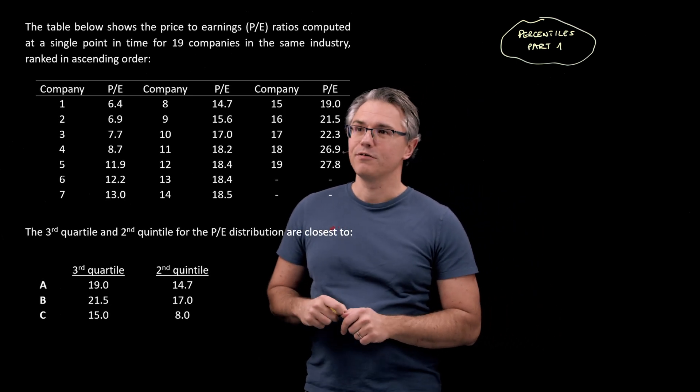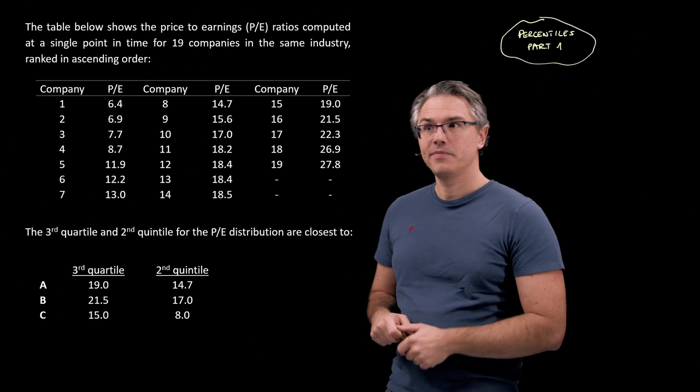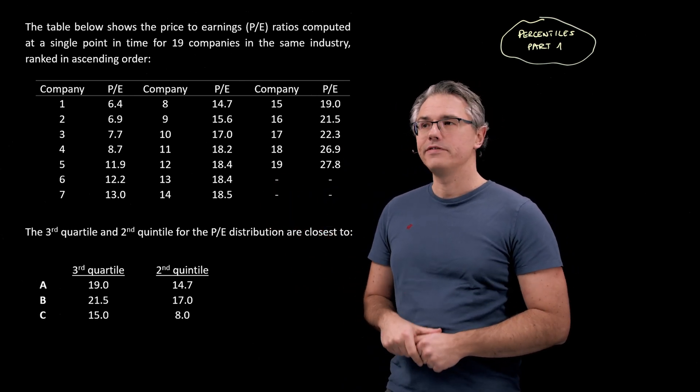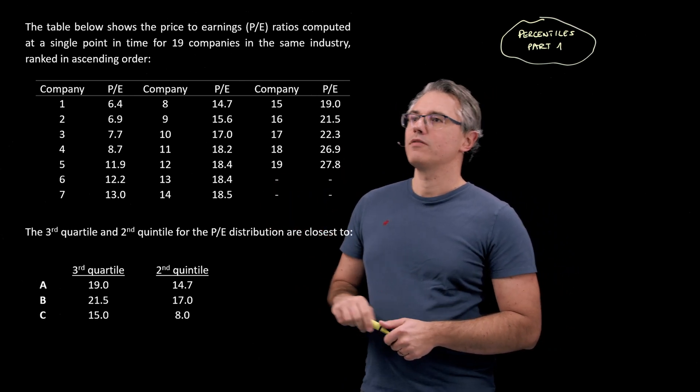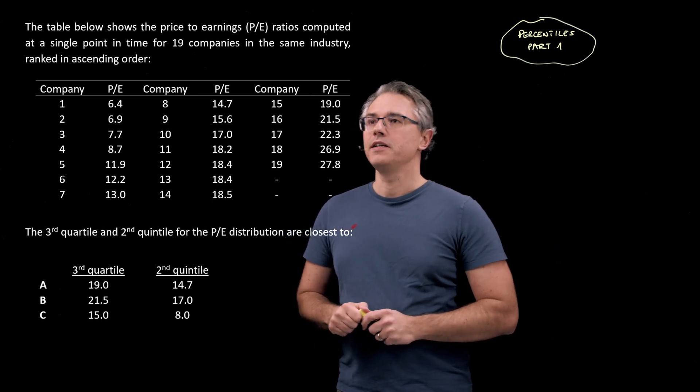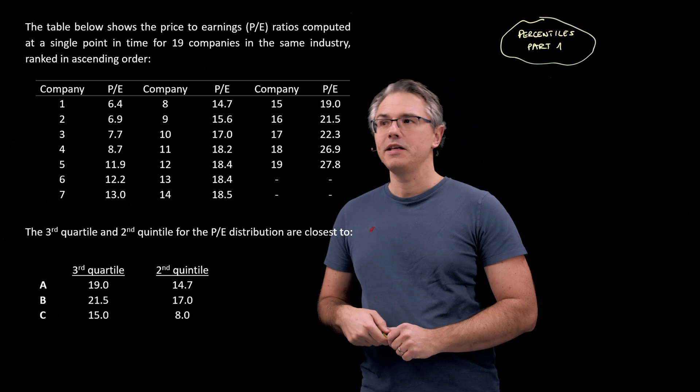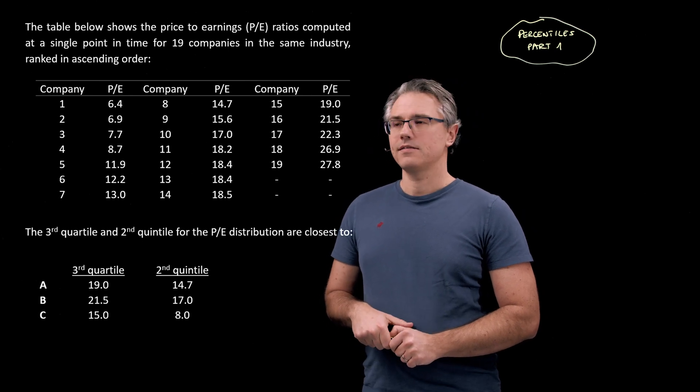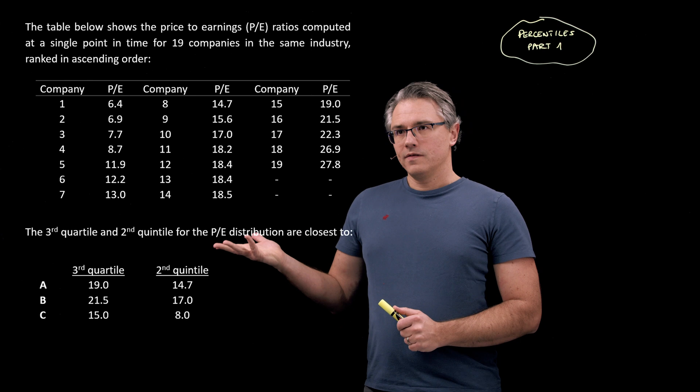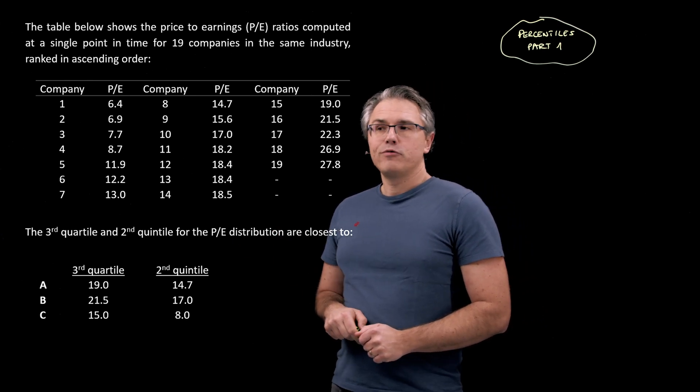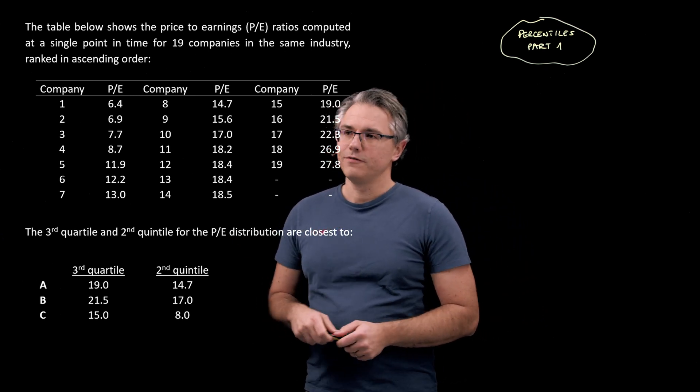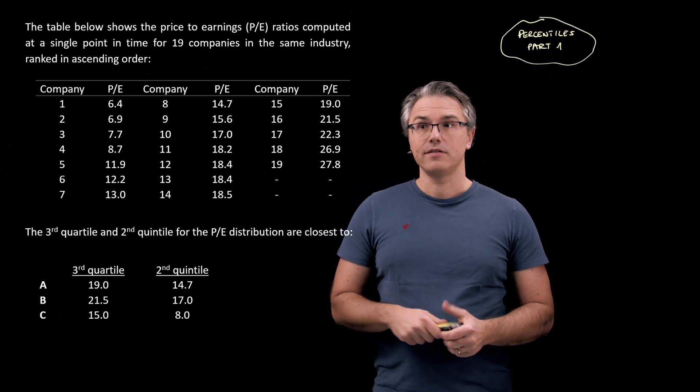This is the rather lengthy question that we're going to have a go at, but a lot of it is the table with the data. The table below shows the price-to-earnings PE ratios computed at a single point in time for 19 companies in the same industry, ranked in ascending order. The third quartile and second quintile for the PE distribution are closest to...